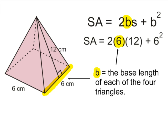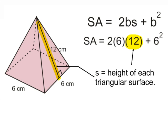The variable s in our equation simply represents the height of each triangular face. In this given example, 12 centimeters is the height of each triangular face. So simply substitute the value of 12 in for the variable s.